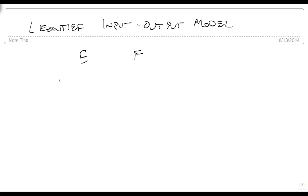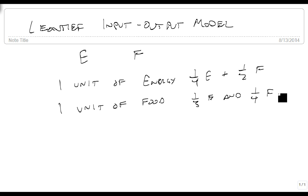To produce one unit of energy requires one-fourth E plus one-half F. So to get one unit of energy, I need one-fourth of a unit of energy and one-half of a unit of food. To produce one unit of food requires one-third unit of E and one-fourth unit of food. So I've got to use some food to create more food.